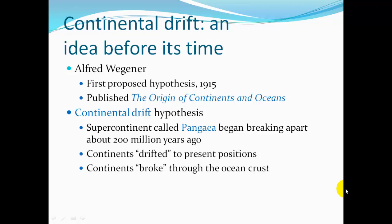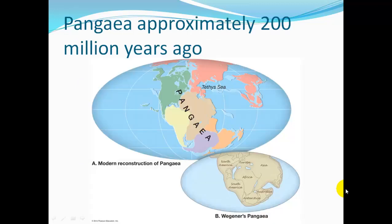The continental drift hypothesis discusses a supercontinent called Pangaea, which began breaking apart about 200 million years ago, and the continents drifted to their present positions, breaking through the ocean crust.